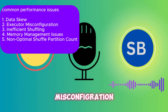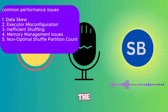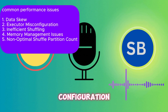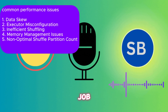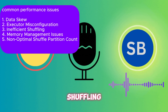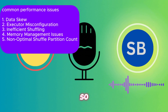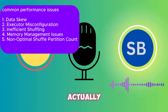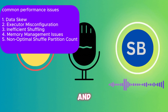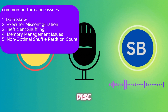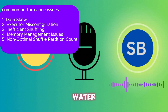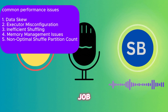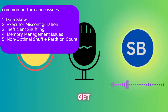We also have executor misconfiguration — people usually don't calculate the right configuration for the job, which slows things down. Inefficient shuffling is another issue: when doing group-by or join operations using default shuffle settings, it causes excessive network activity and writes a lot of data to disk, increasing overhead and sometimes leading to out-of-memory issues.